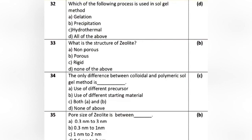Question 10: The only difference between colloidal and polymeric sol-gel method is — Option A: use of different precursor. Option B: use of different starting material. Option C: both A and B. Option D: none of the above. The correct answer is Option C: both A and B.